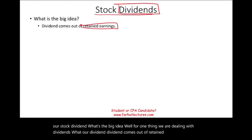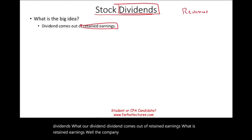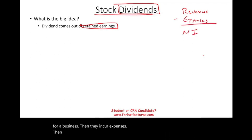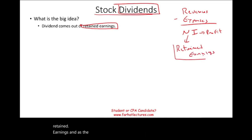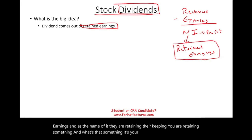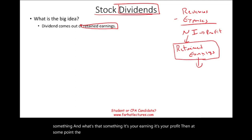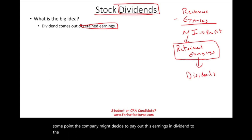Dividends come out of retained earnings. What is retained earnings? Well, the company generates revenues — that's what they do as a business. Then they incur expenses. What's left is net income, which is the same thing as their profit. Now, what's going to happen is they're going to park that profit in an account called retained earnings. As the name implies, they are retaining — they're keeping — their earnings, their profit.